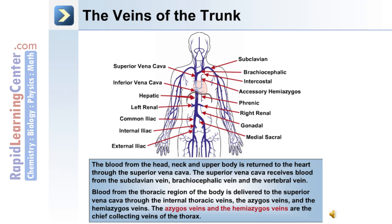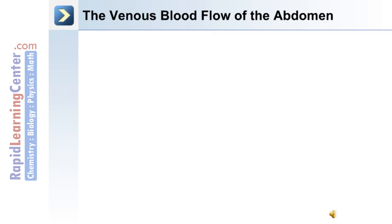The blood from the head, neck, and upper body is returned to the heart through the superior vena cava. The superior vena cava receives blood from the subclavian vein, brachiocephalic vein, and the vertebral vein. Blood from the thoracic region of the body is delivered to the superior vena cava through the internal thoracic veins, the azygous veins, and hemi-azygous veins. The azygous veins and hemi-azygous veins are the chief collecting veins of the thorax.